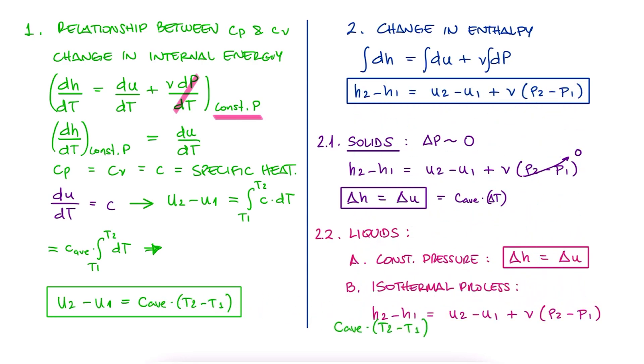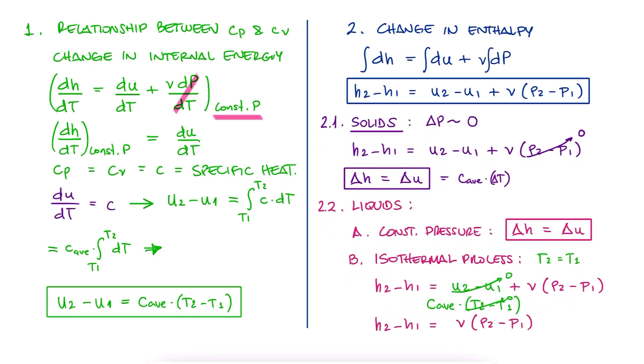In this case, u2 minus u1 is zero, because t2 minus t1 is zero, and therefore h2 minus h1 is equal to v times p2 minus p1.